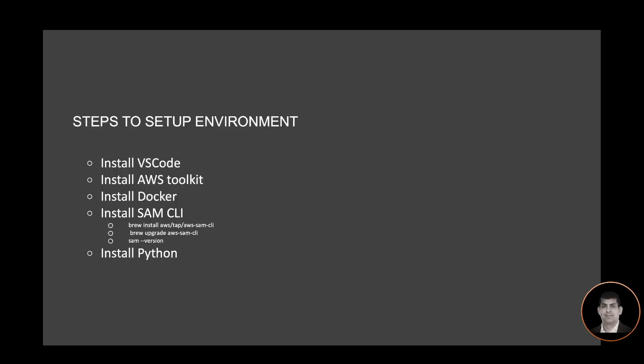A recap of steps to set up the environment: you need to install VS Code, install AWS Toolkit, get Docker, install SAM CLI — here are the commands you can use to install the SAM CLI if you don't already have it installed — and install Python.